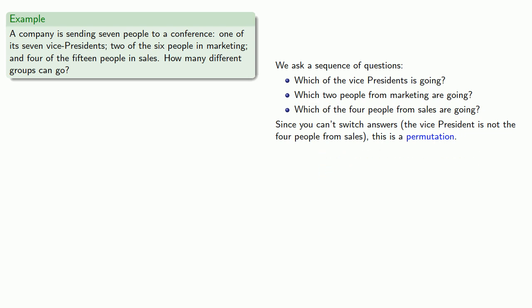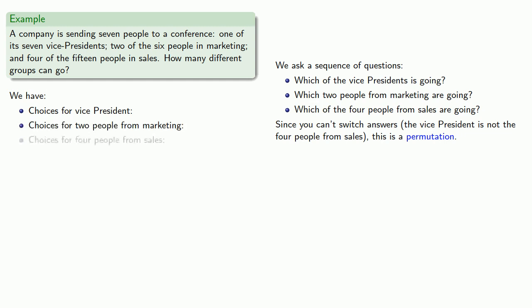So we just have to figure out how many possible choices we have for the vice president, how many for the two people from marketing, and how many for the four people from sales. Since there are seven vice presidents, we have seven possible choices for the vice president.